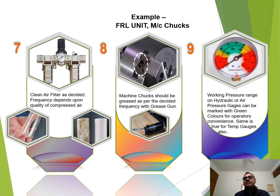Where you have chuck machines, there are grease points, and this is the grease gun — based on the decided frequency, fill the grease. Pressure gauges or temperature gauges should have a color code. If the dial is not colored, you can mark it yourself with a permanent marker. The needle should always be in the green portion — within the decided range — and not falling outside that.